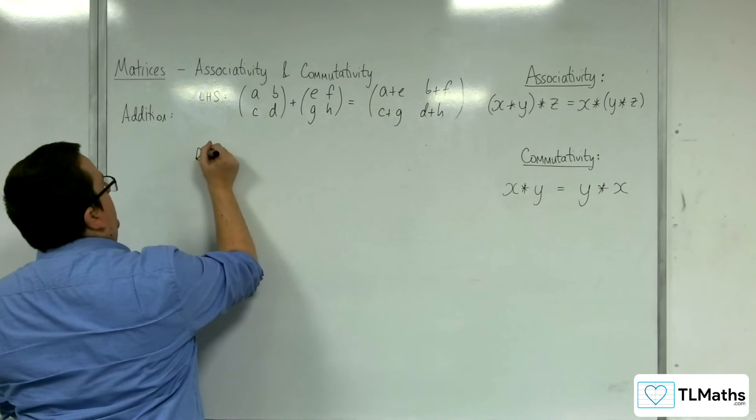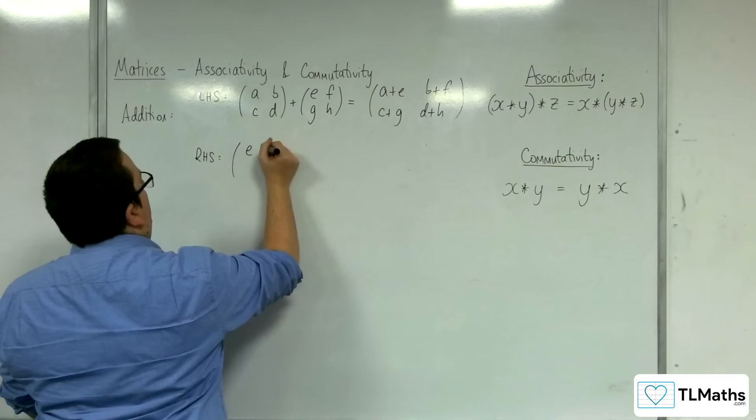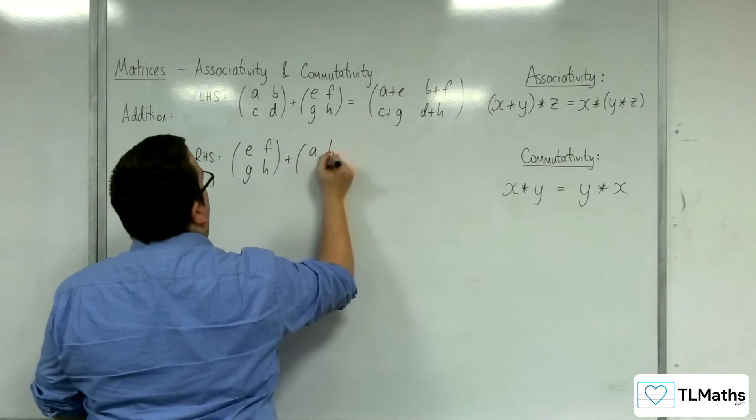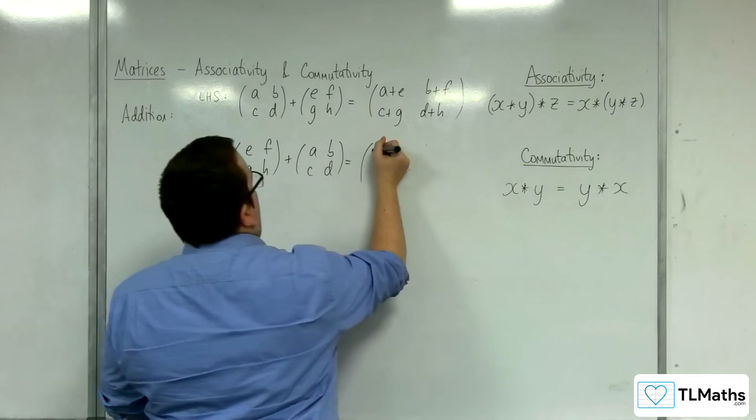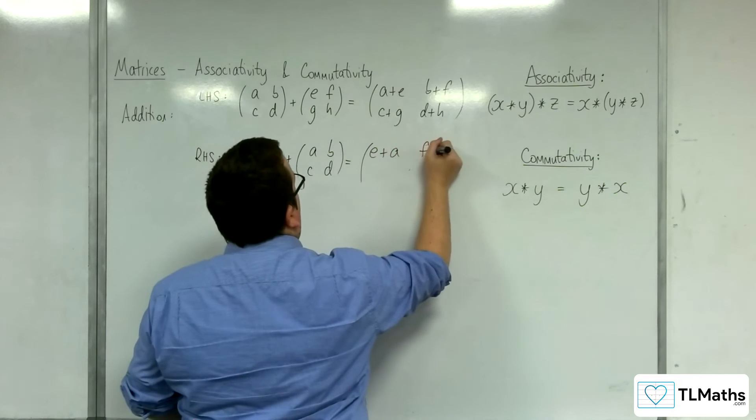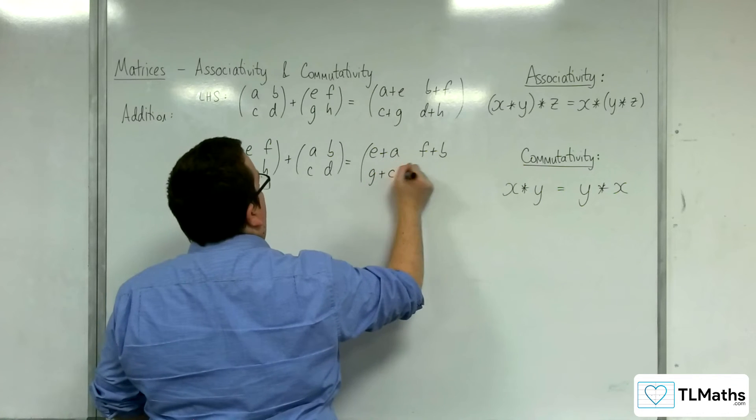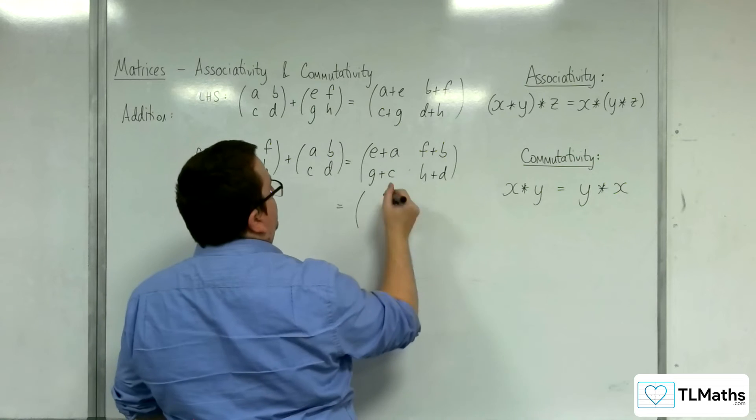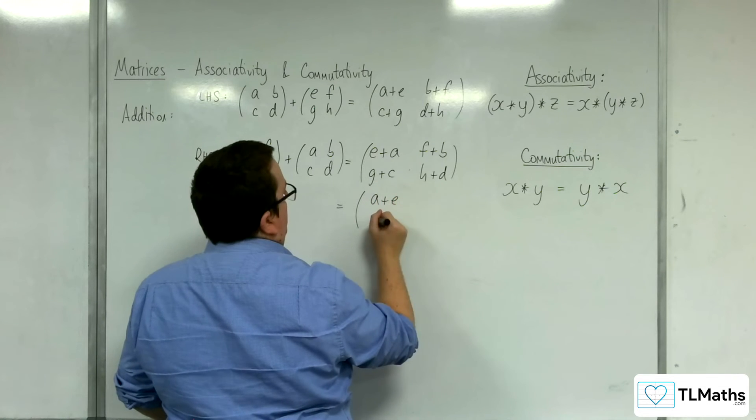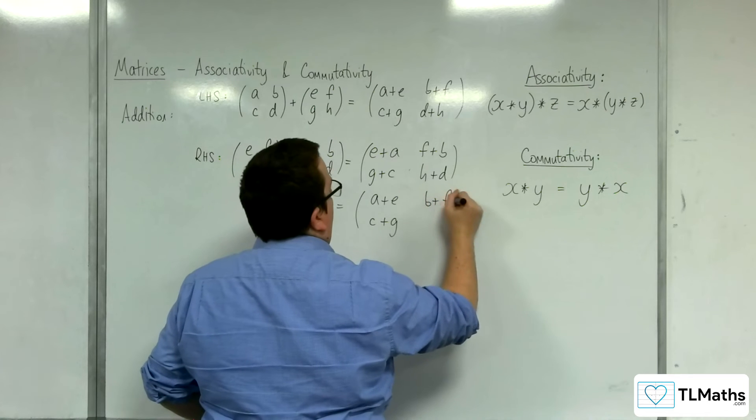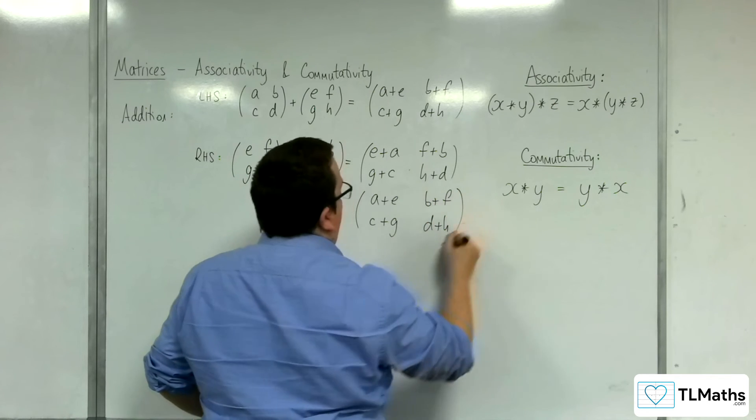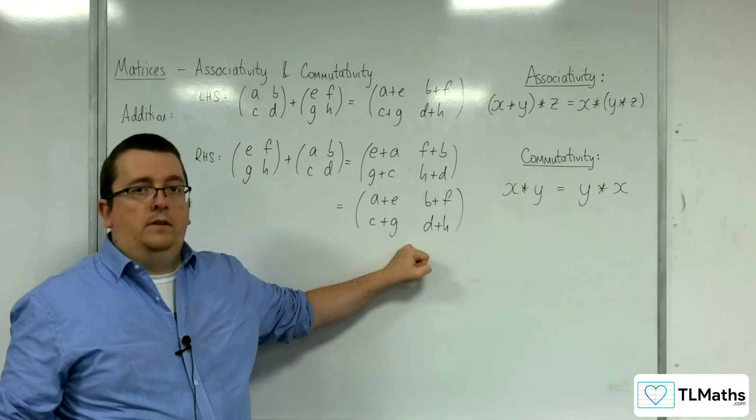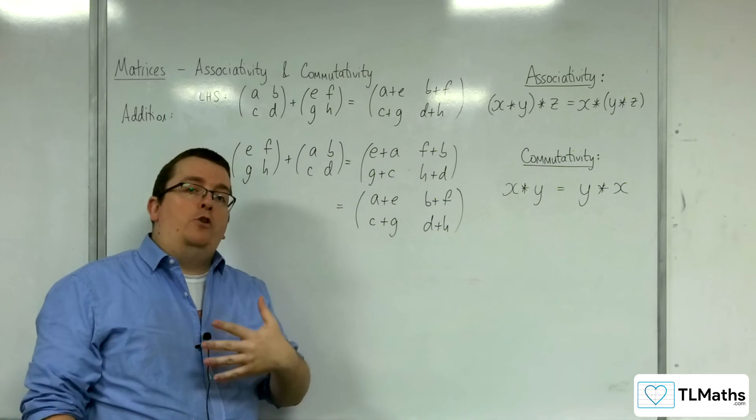Now the right-hand side would be e, f, g, h, plus a, b, c, d, which is e+a, f+b, g+c, and h+d. Which of course is the same as a+e, c+g, b+f, and d+h.